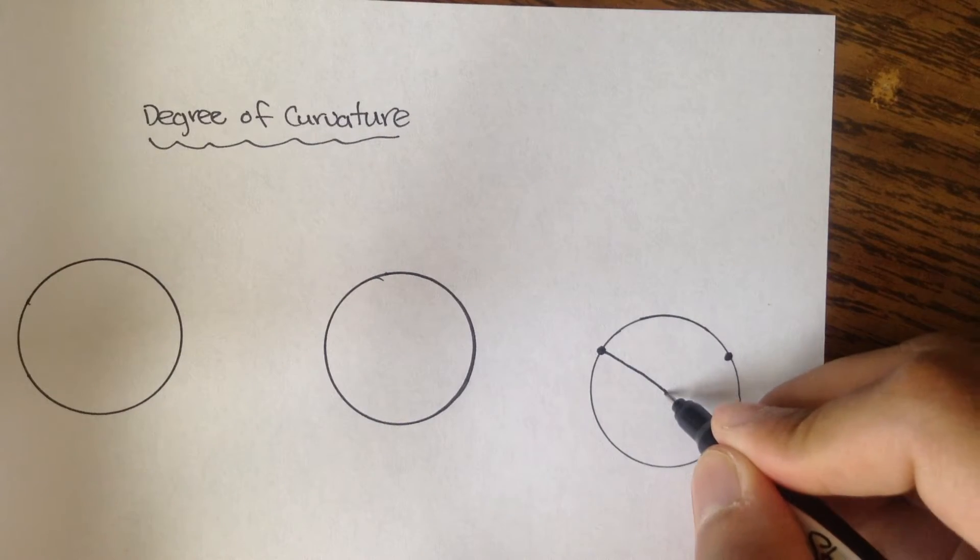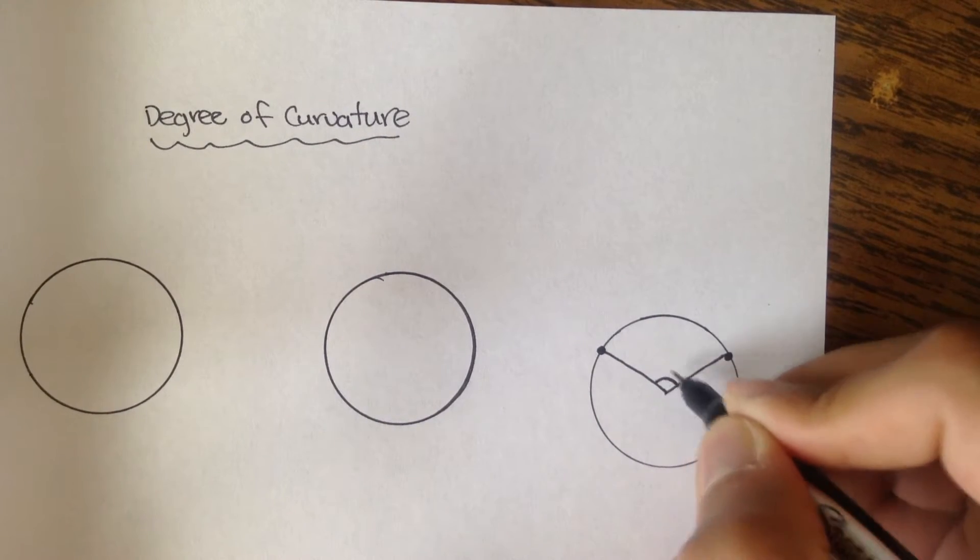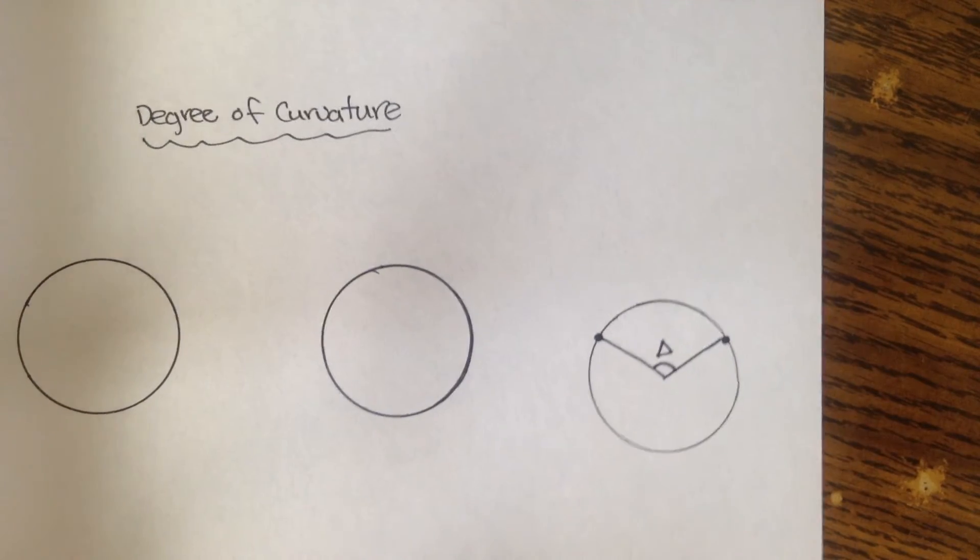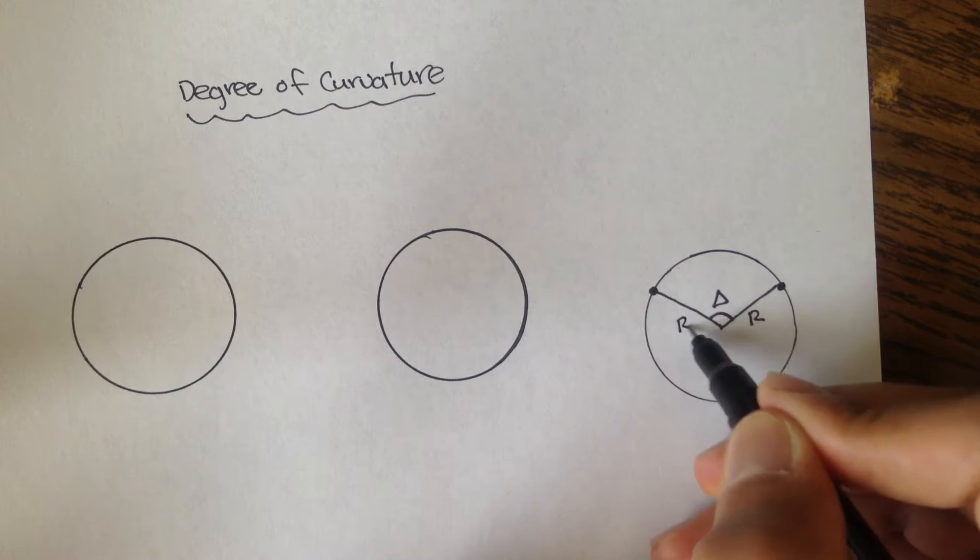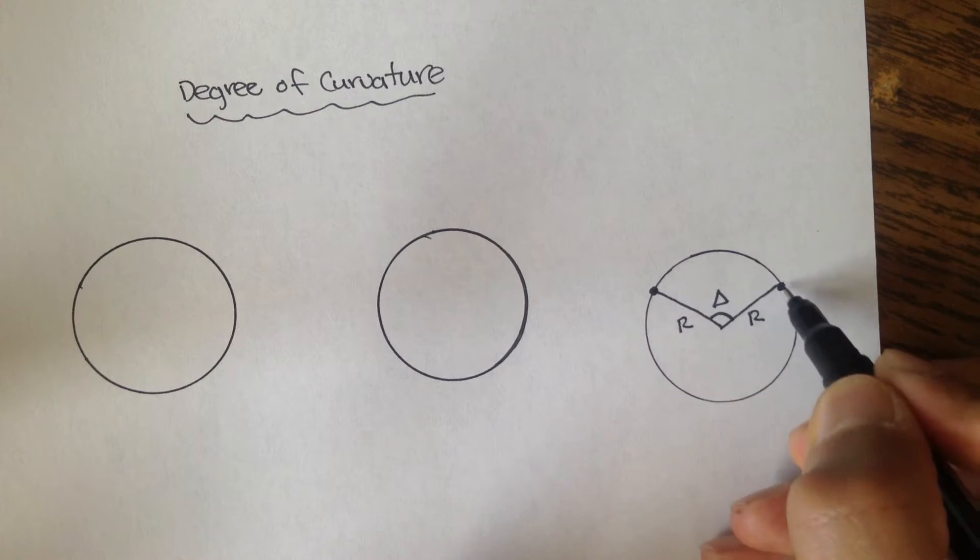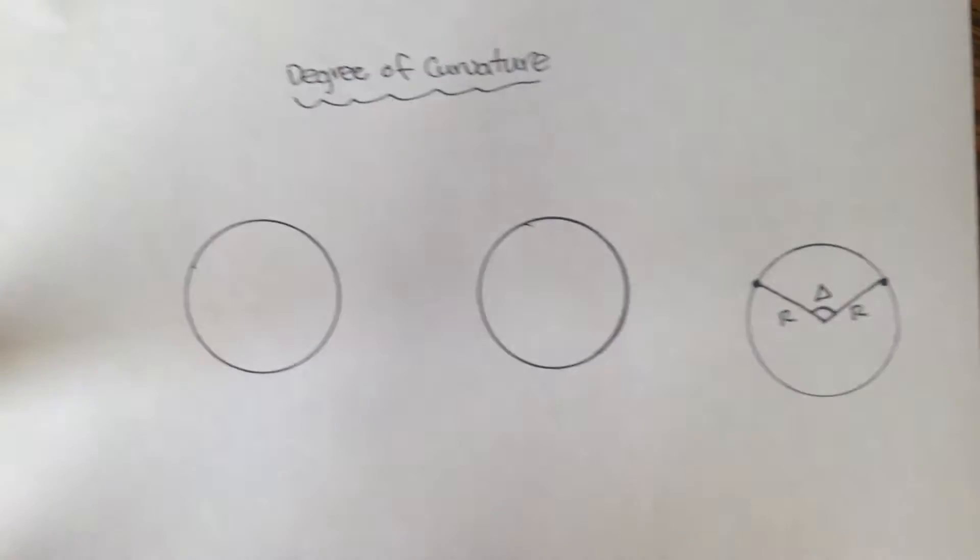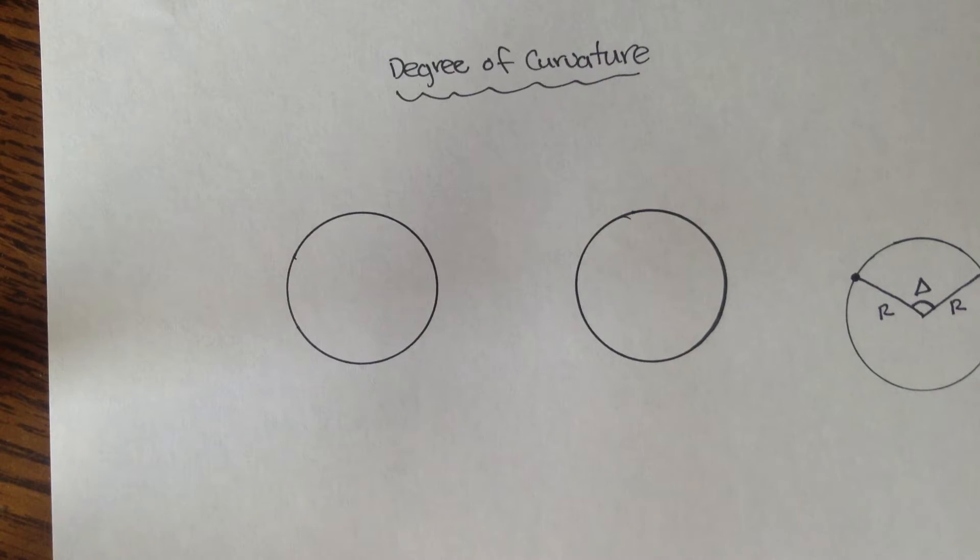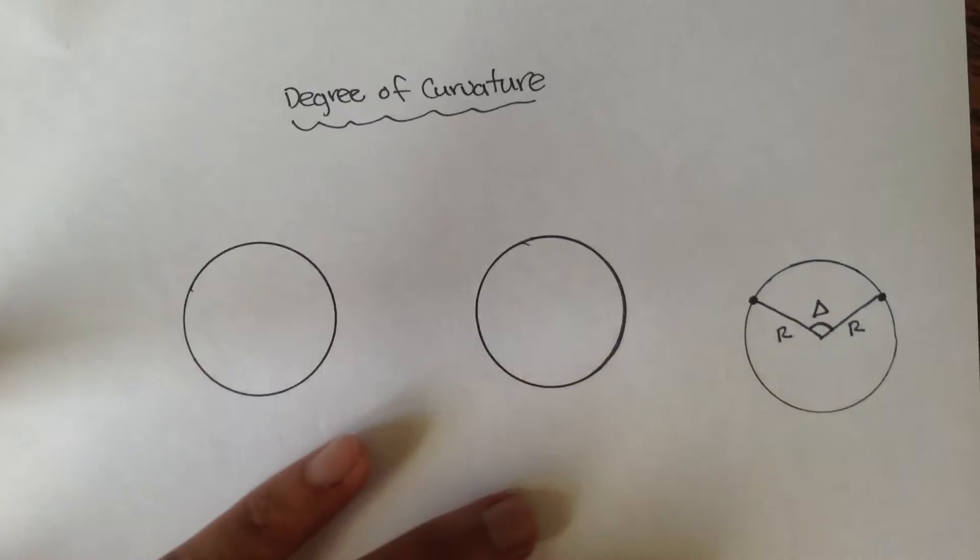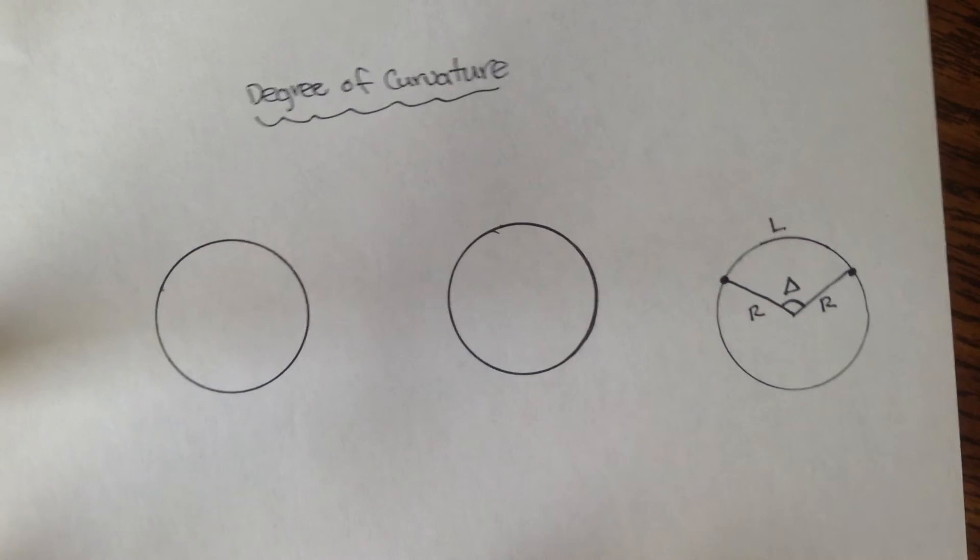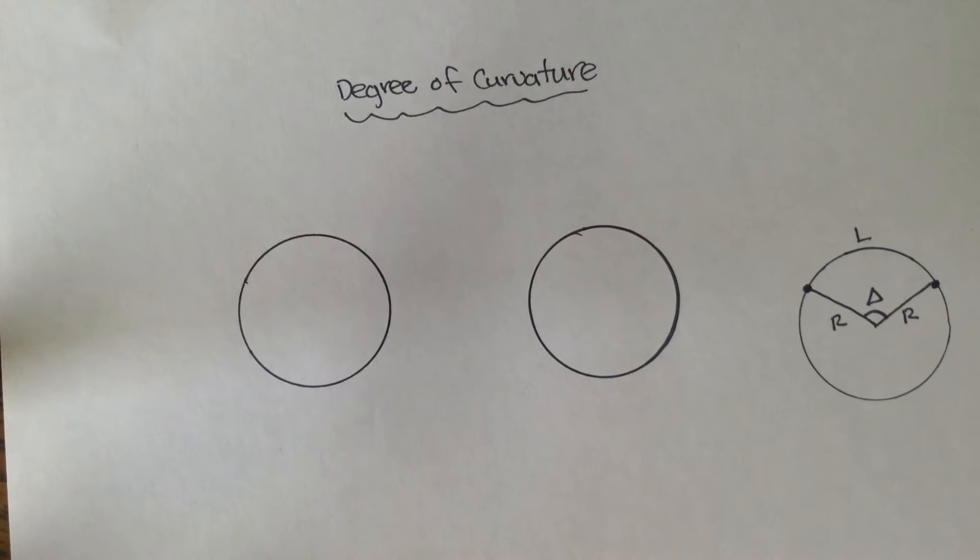The radius lines actually create an angle called delta. That delta, along with if you know one of the sides, can give us the length of this curve. So in degree of curvature, what we're actually trying to figure out is, instead of having a length L, instead of having this length L, degree of curvatures are only used for lengths equal to 100.